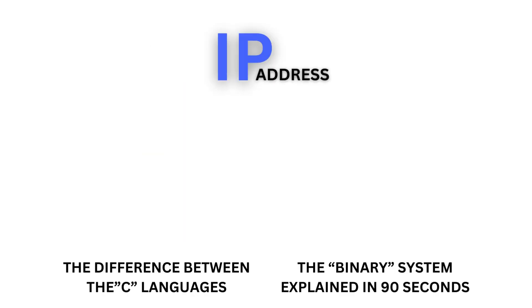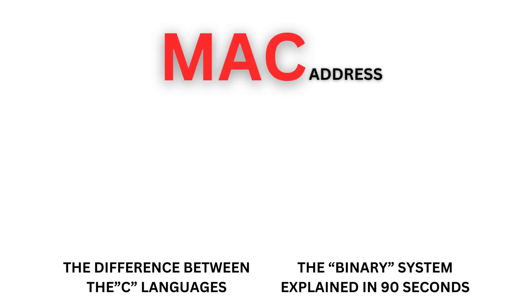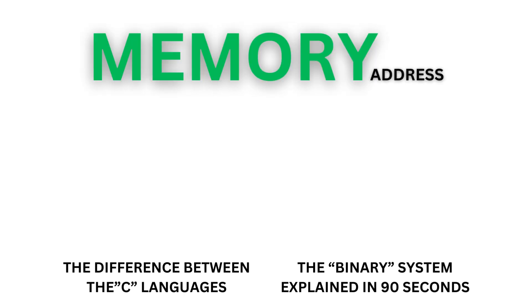To sum up: IP address identifies a device on the internet or a local network. MAC address identifies different devices using the same local network. Memory address references a specific memory location used at various levels by software and hardware.